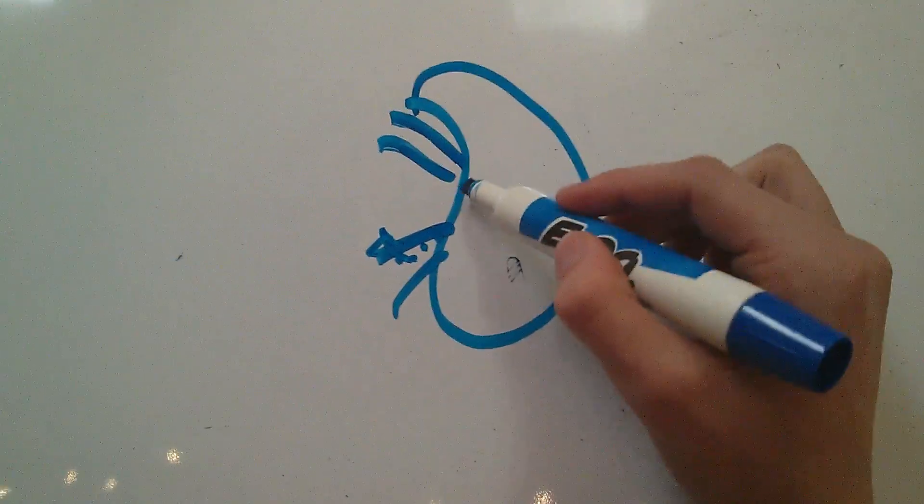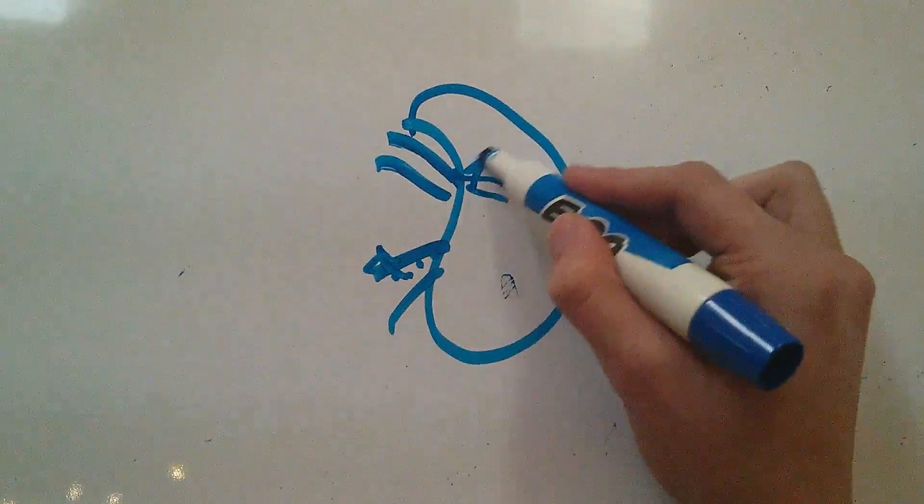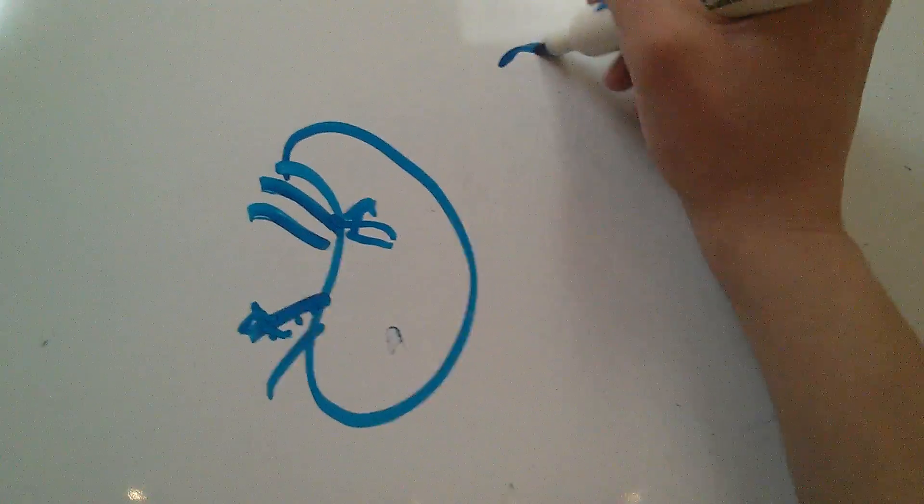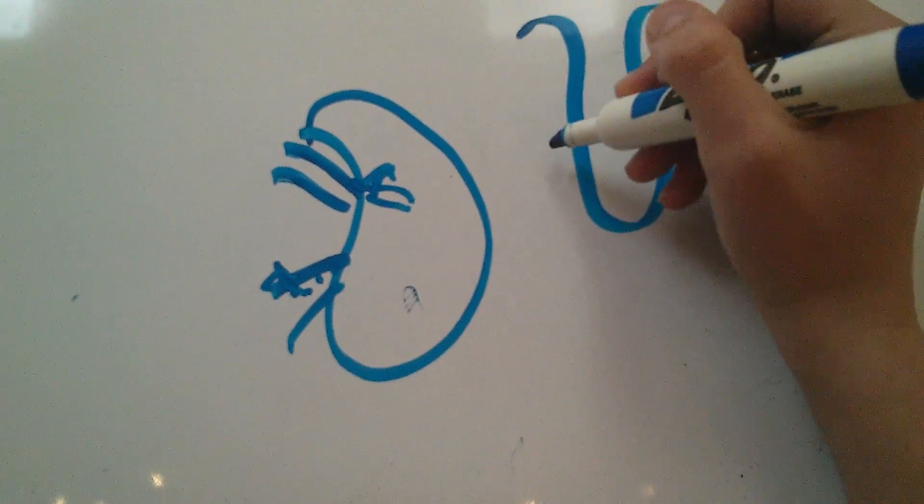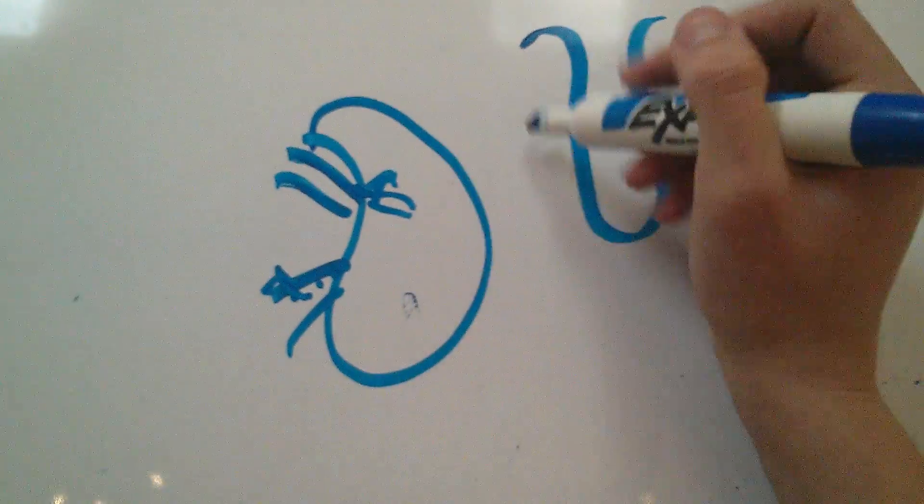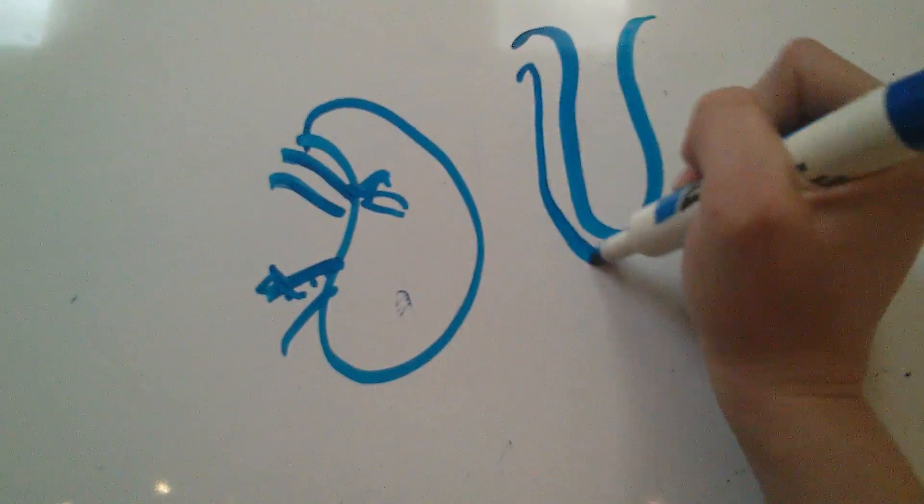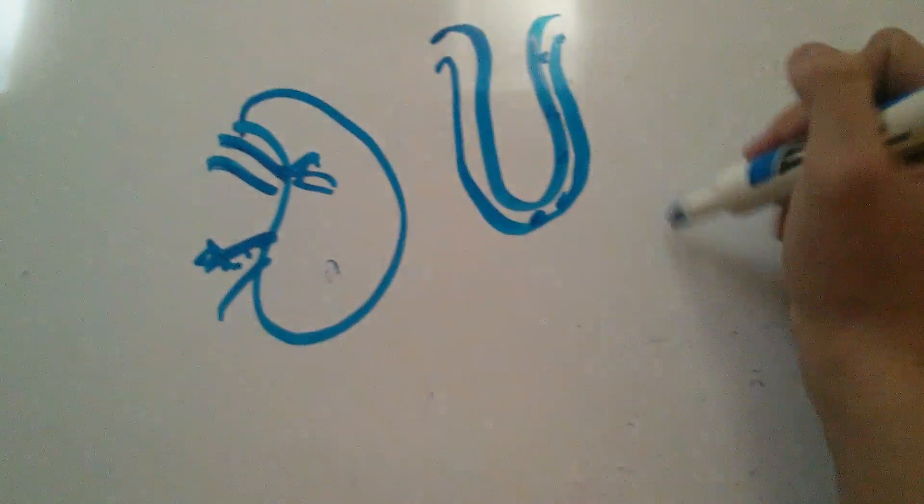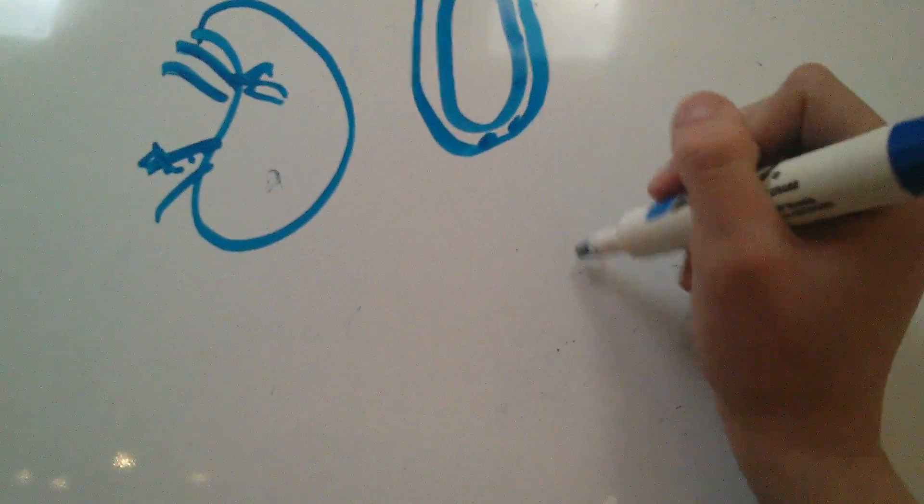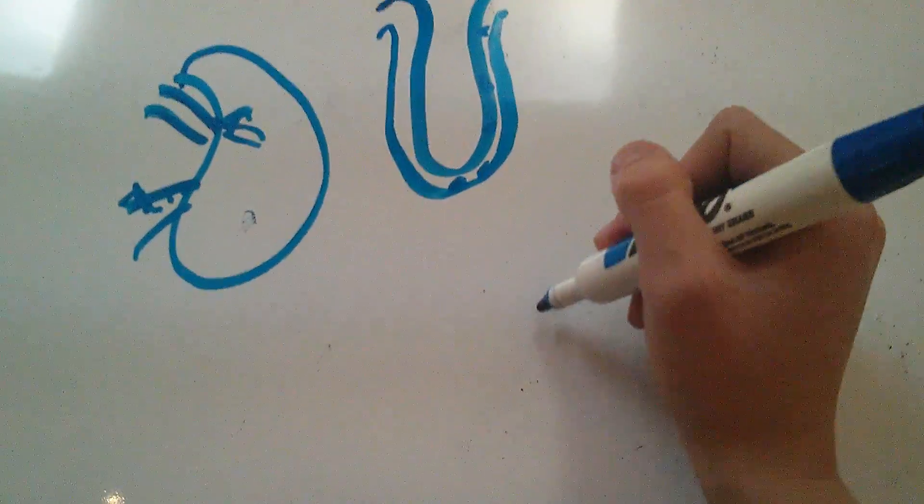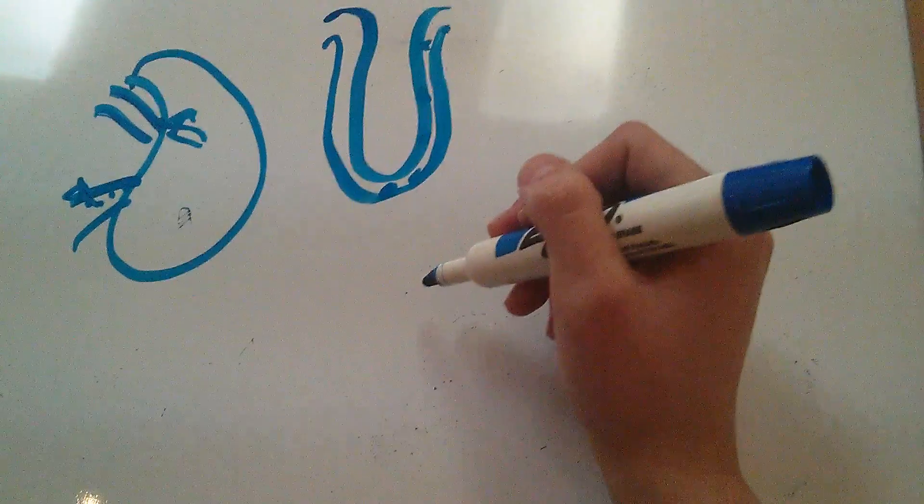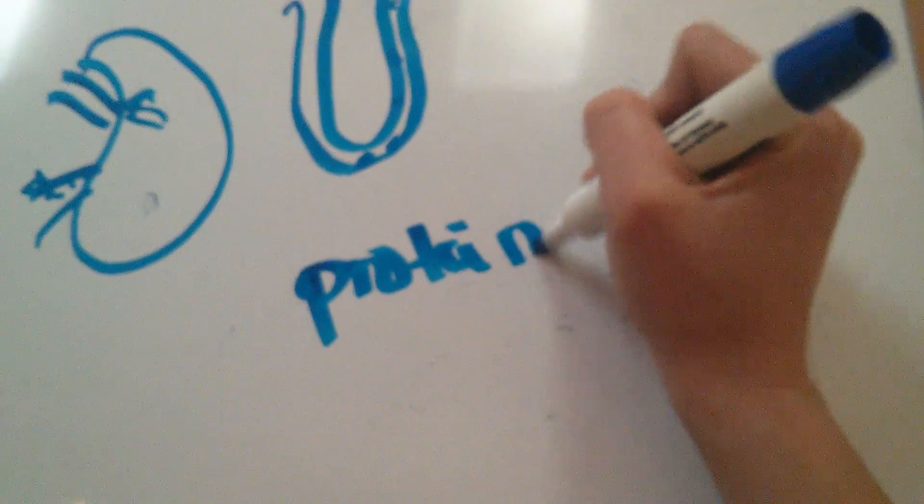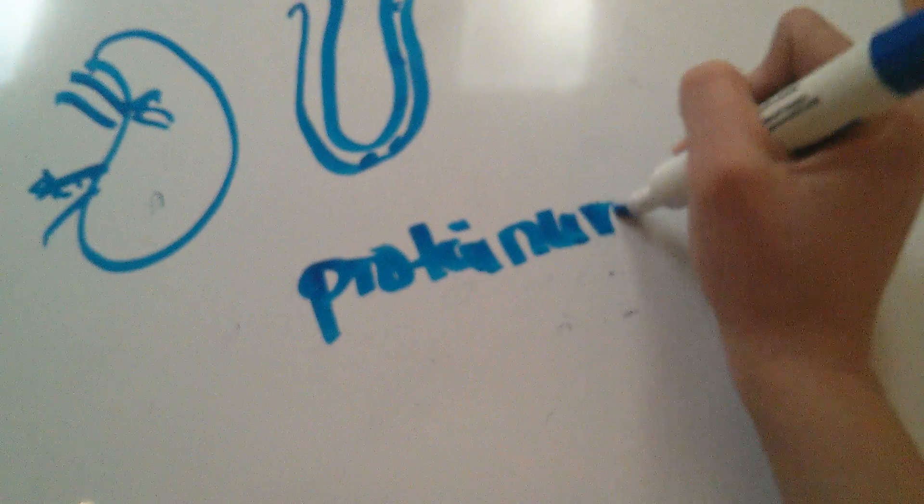Into the kidney, which is going to then, remember the loop of Henle thing, the fibronectin is going to leak into the loop of Henle and then be reabsorbed and then excreted in the urine. Which is why when you have the urine filled with those fibronectin proteins, that's going to be what we know as proteinuria.